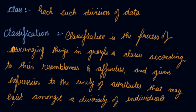Which means that you are arranging the data into groups or classes according to their resemblance or affinities — for example, resemblance of educated or uneducated in the education variable — and given expression to the unity of attributes that may exist among a variety of individuals. In this way, data is divided into different groups and classified on the basis of class similarities.